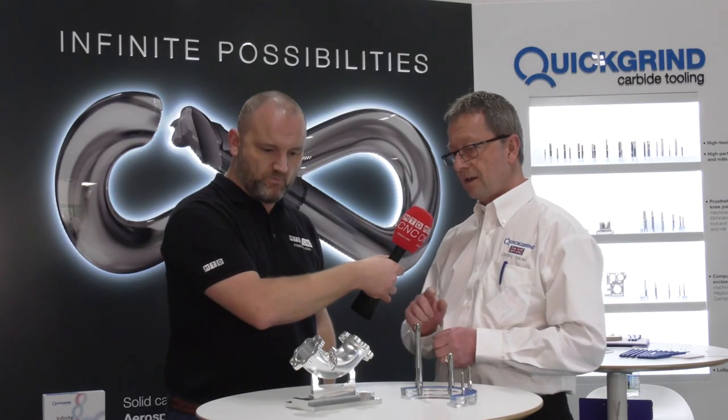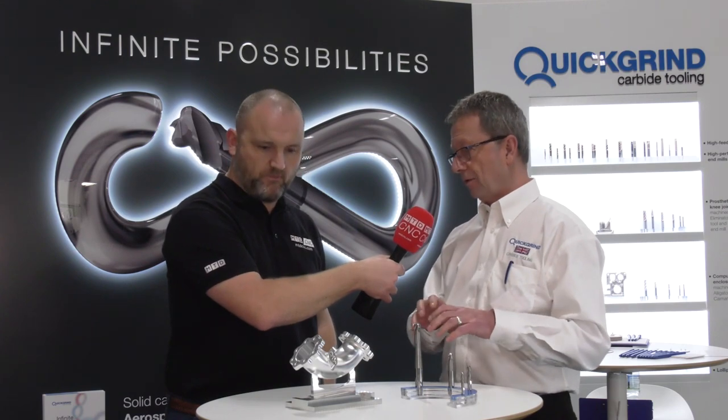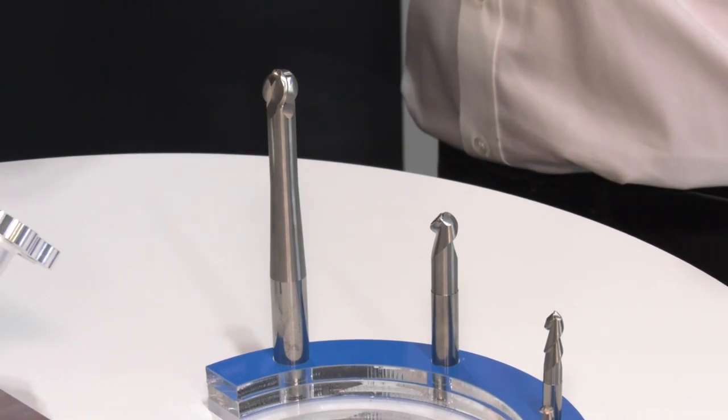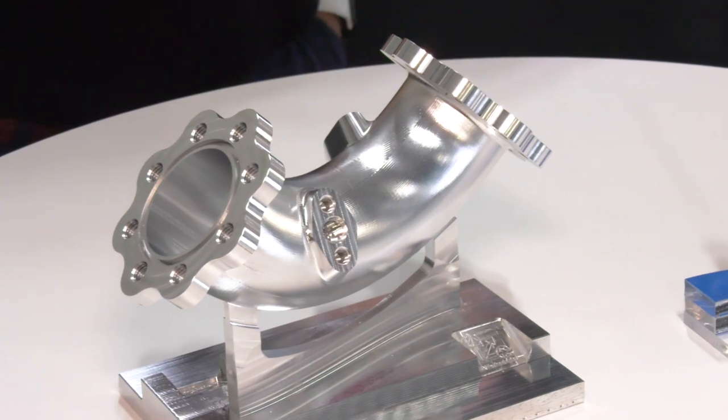We drilled both sides, opened it all out, and then used the lollipop to go down as far as we can. Circle interpolation, turn around, circle interpolation on the other side, job's done.